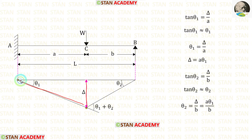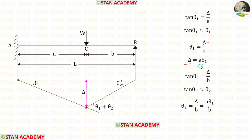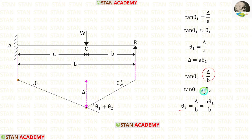Let us take this triangle. In this triangle, tan theta1 is equal to delta upon a. The value of tan theta1 will be very small, so tan theta1 is approximately equal to theta1. Therefore theta1 equals delta upon a, and delta equals a·theta1. In the other triangle, tan theta2 equals delta upon b, so theta2 equals delta upon b. For delta we can apply a·theta1.